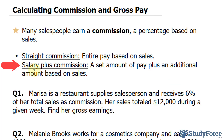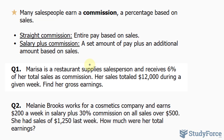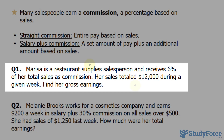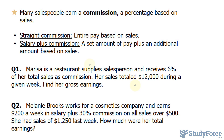With salary plus commission, there's a guaranteed pay even if you don't sell anything. Question 1: Marissa is a restaurant supplies salesperson and receives 6% of her total sales as commission. Her sales total $12,000 during a given week. Find her gross earnings. In this situation, Marissa is earning straight commission.